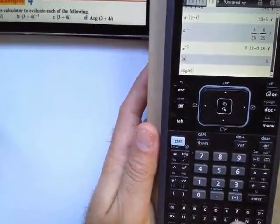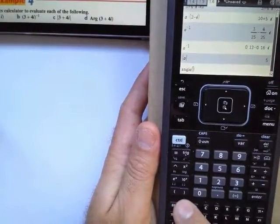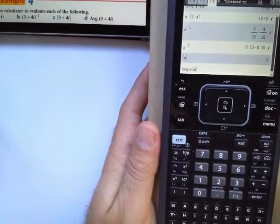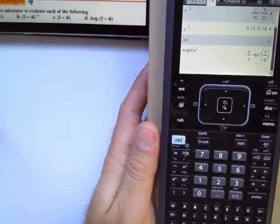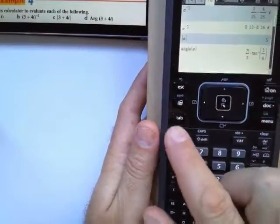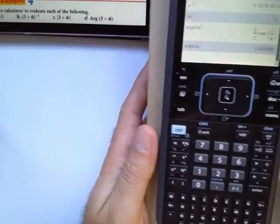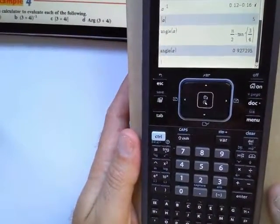Of what? Of my complex number a. If you do not have a, you can type in what it is. I'm then going to say enter. That is the exact value; the decimal is 0.927.